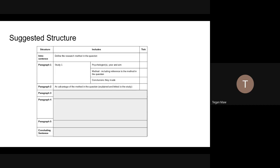For the second paragraph, you need to give an advantage or disadvantage, some sort of evaluation of the method in the question, explain it and link it to the study or theory. Paragraph three, again the same - an advantage or disadvantage of the method in the question explained and linked to the study.